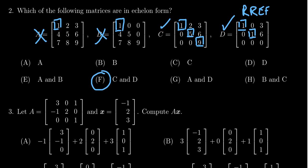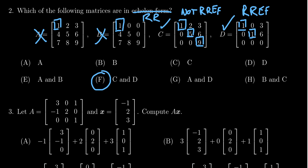Choice C, on the other hand, is not in row-reduced echelon form. The reasons are that there are pivots that are not one, and numbers above the pivots are not necessarily zero. So C is an example of a matrix in echelon form but not in row-reduced echelon form, while D is in row-reduced echelon form and thus also in echelon form. Pay attention to the question: since it asks for matrices in echelon form, we select C and D, which is choice F. If the question instead asked only for matrices in row-reduced echelon form, we would choose only D.